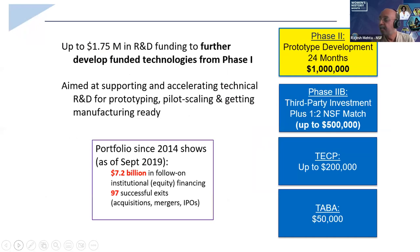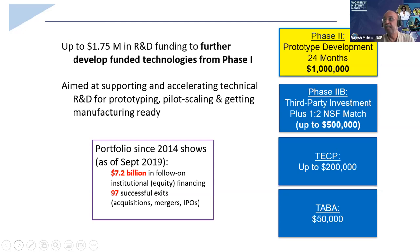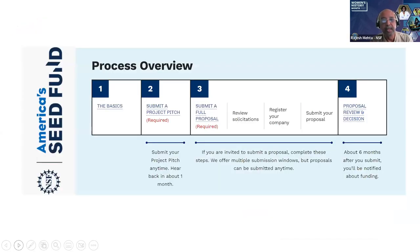Our phase two is two years and $1 million. Since you have demonstrated the technical feasibility of the idea, you take it to the next level, scale it up, and make it manufacturing-ready. We also have additional supplemental grants depending on availability of funding. Two major ones used by our awardees are TECP — the Technology Enhancement Commercialization Program — which is up to 20% of the grant, and phase two B where we will match 50 cents on the dollar up to half a million dollars if you have sales revenues or qualified investment of $1 million or more. We also provide $50,000 of commercialization assistance.